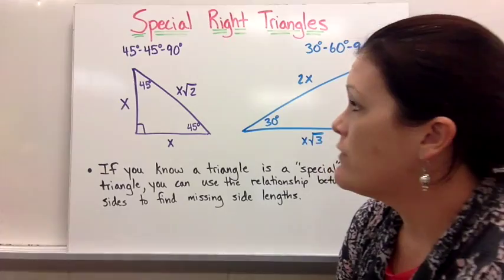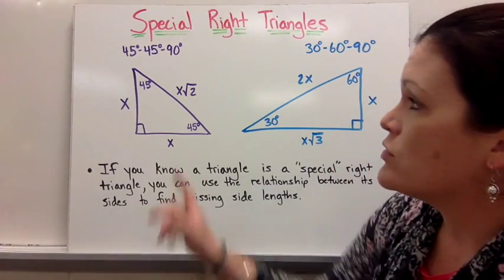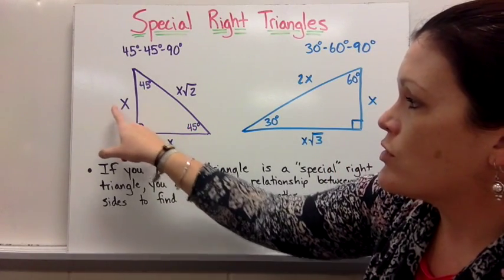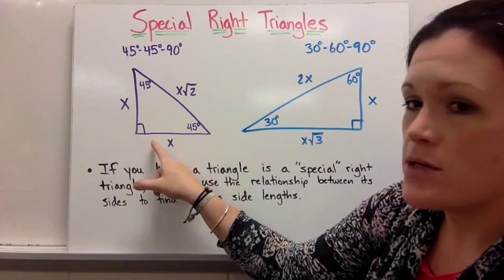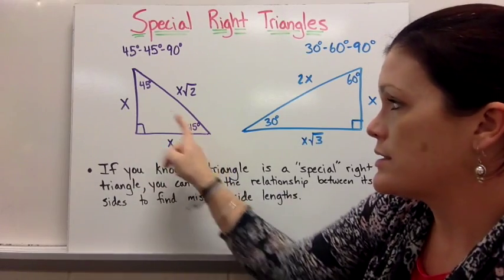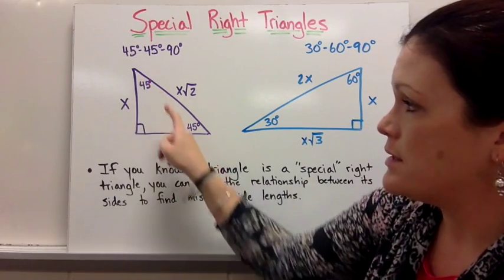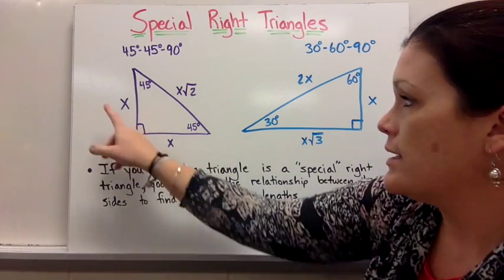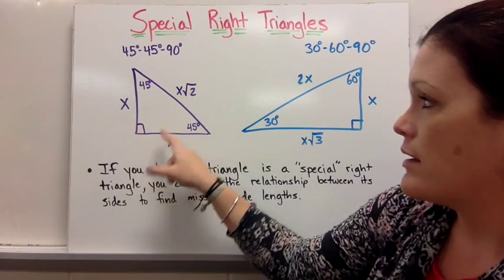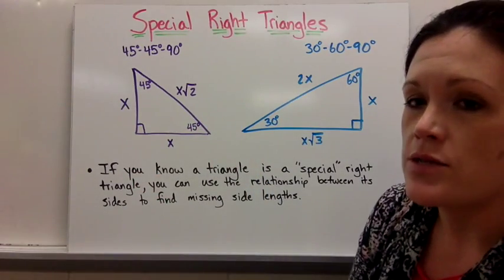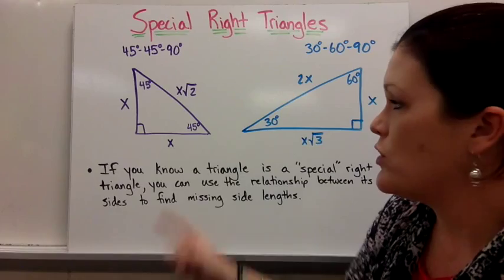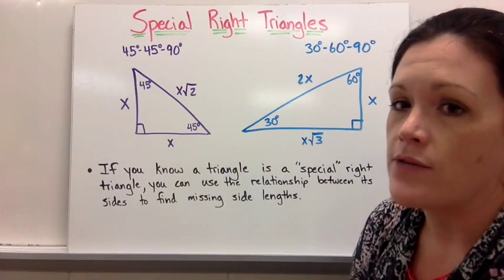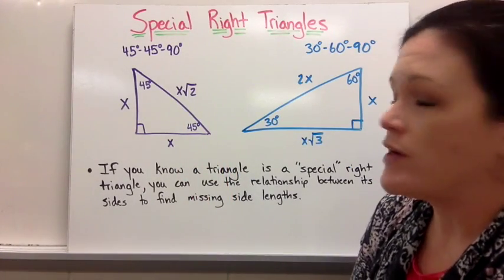With the 45-45-90 triangle, you have two angles that are congruent, and therefore the two sides that correspond with those angles — the sides opposite those angles — are also congruent. We call those x, and then the hypotenuse would be x times the square root of 2. So if you know one side, you can find all of them knowing it's a 45-45-90 triangle.